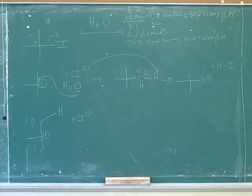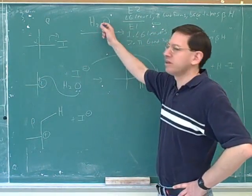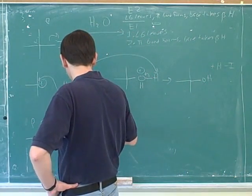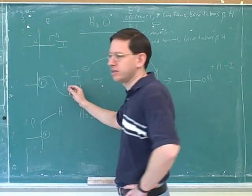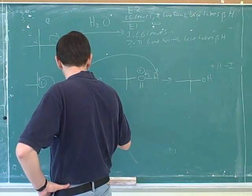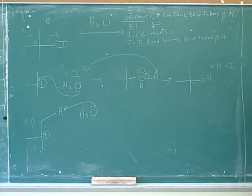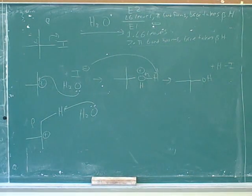Who should our base be? You used the iodide. That's not a terrible thought, but the original base here was the water, so it would be more conventional to show the water — the same thing that would have been the nucleophile in the SN1. Now we need one more arrow that shows the pi bond forming. That's the arrow.